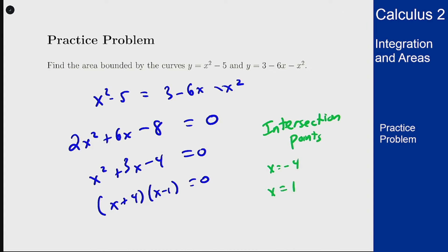The last step before we actually find the area is to figure out which of these functions is on top, and we can do it by plugging in 0 because 0 is between these two values. Plugging in 0 gets me minus 5 for the first function and plus 3 for the second, so this one is on top.